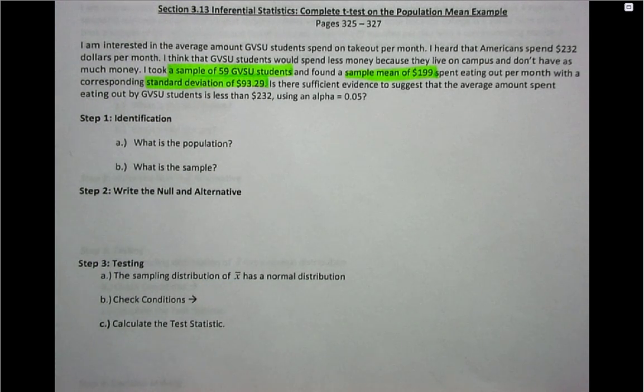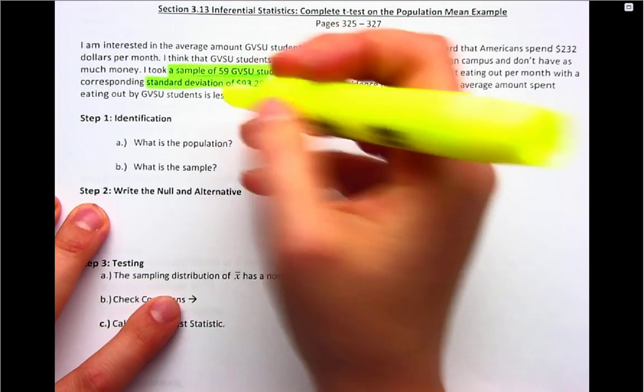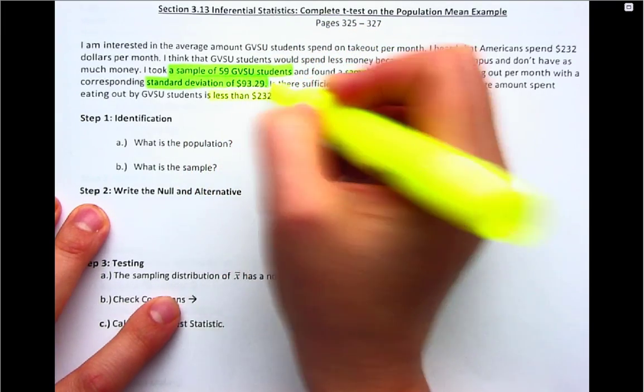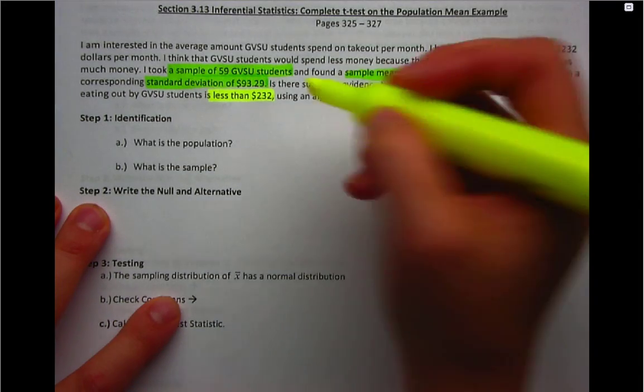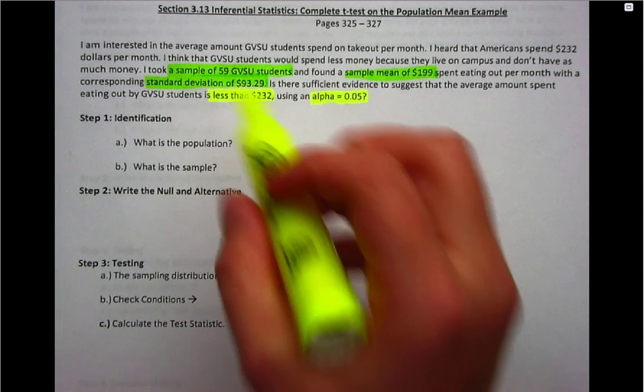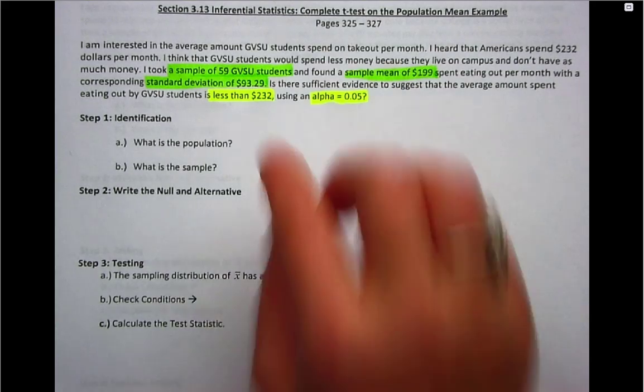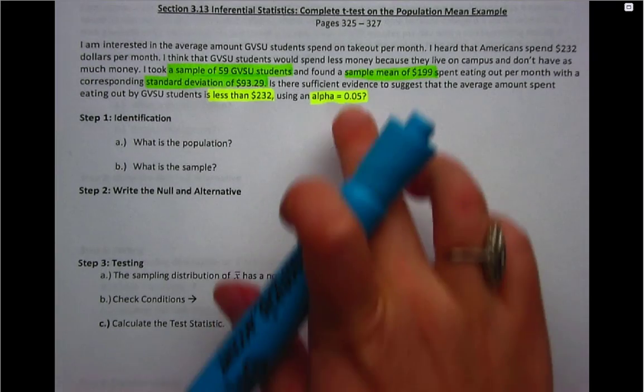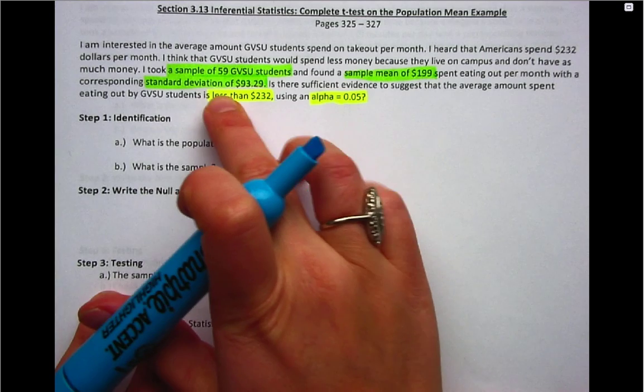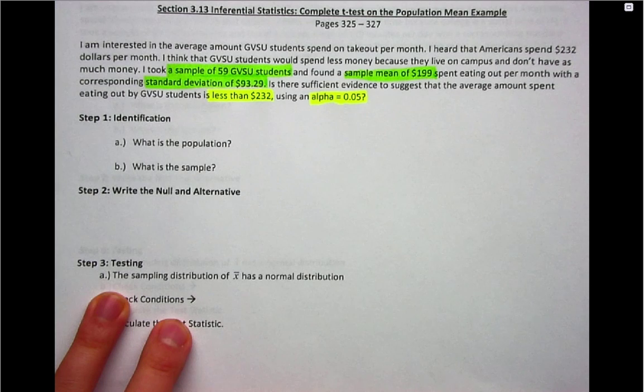You also need information regarding what you want to be able to show for the hypothesis test. We want to be able to show that less than $232 is spent per month. Then you also need to know how to make your decision, so you need to find information on alpha. That's information that's going to help you actually perform the hypothesis test. First in green we need to know the sample, then we need to know information on how to perform the hypothesis test, which includes what we want to show and then the alpha to make our decision.